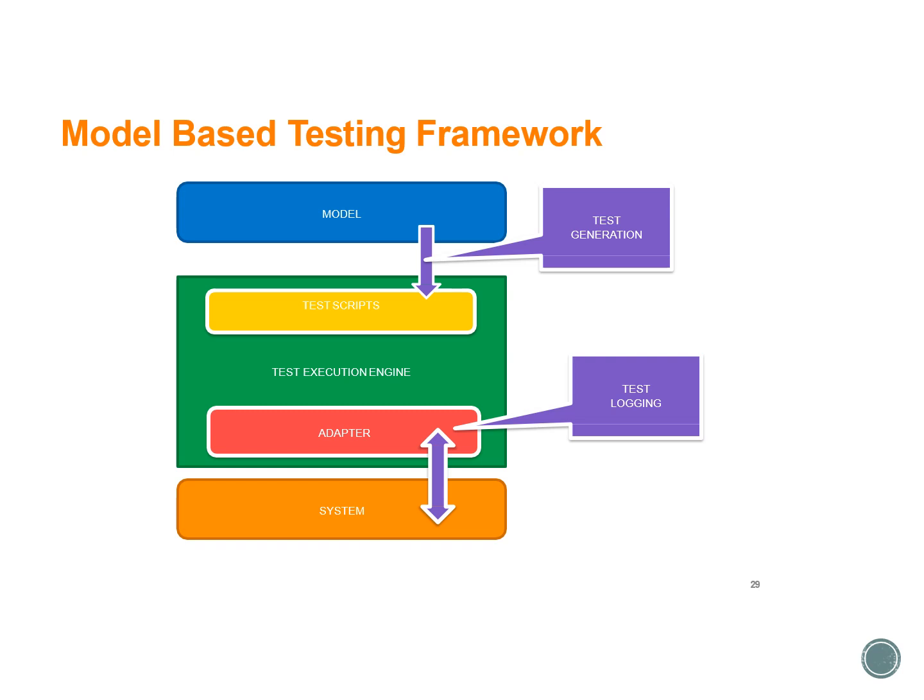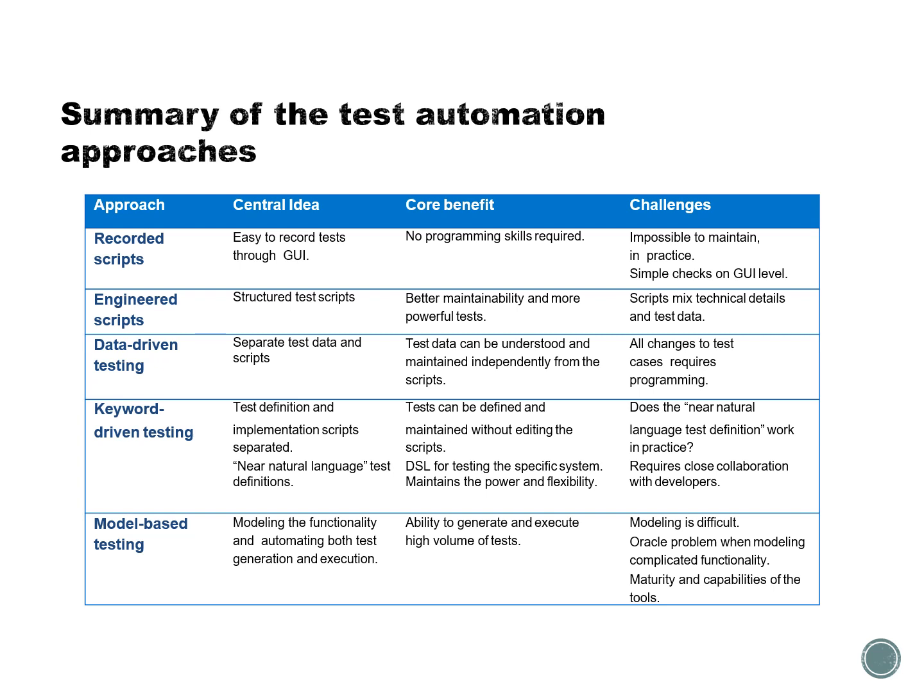In model-based testing, there is a test execution engine working as a middleman between the model and the system. The model is the behavioral model explaining what the system can do — what can happen in a main window, what can be pressed. The test generator creates test scripts that the adapter runs on the system. The adapter records everything the system outputs to a log, which is then analyzed by the testing framework engine to identify suspects of failure. You still have to define what constitutes a failure, but that is a separate concern.